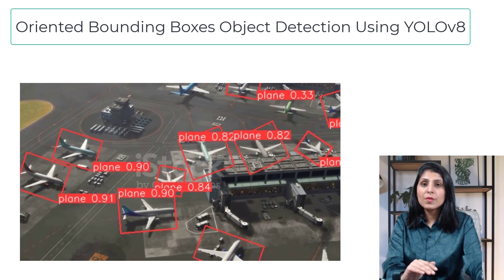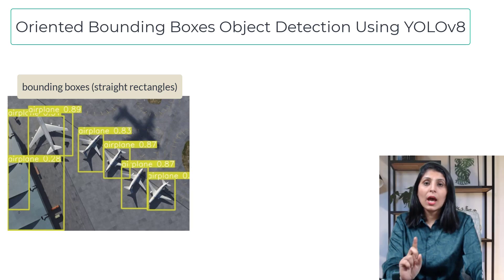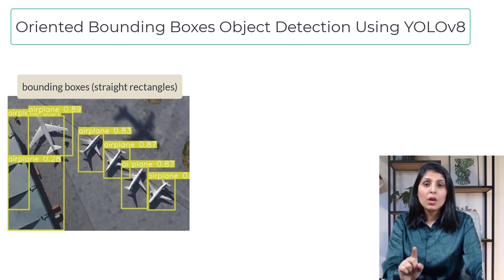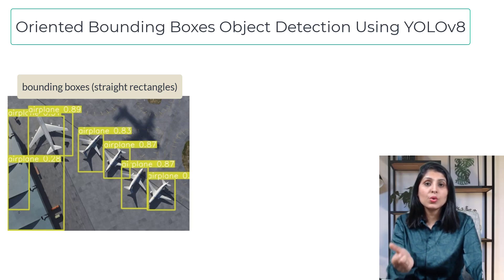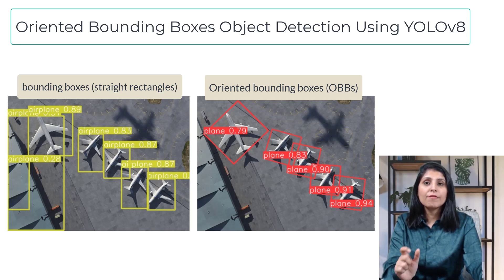Whenever we perform object detection we get bounding boxes, and with each detected object we get their class name and confidence score. Here you can see that the bounding boxes are straight rectangle boxes fixed on the objects, but with the help of oriented bounding boxes we can rotate these rectangle boxes as per the orientation of the object present in the image so that it can fit the object more properly.